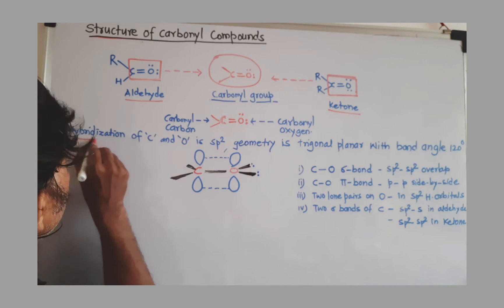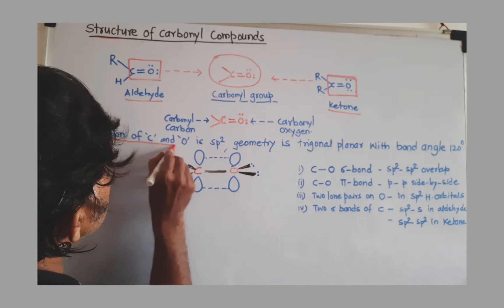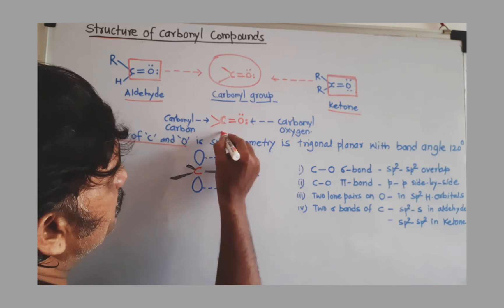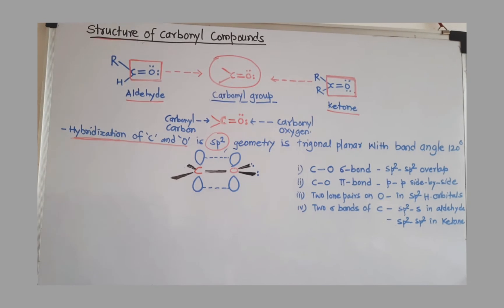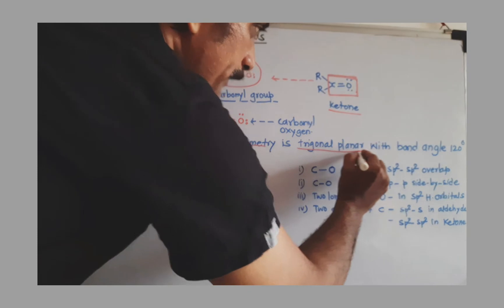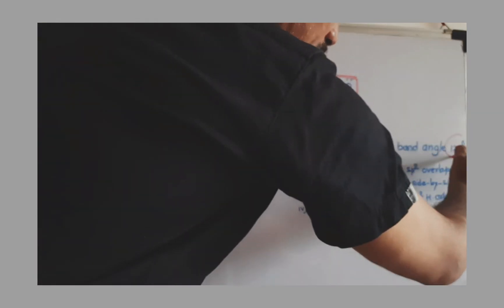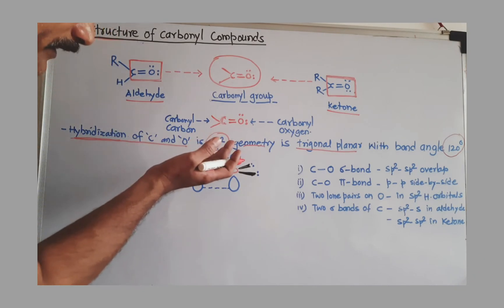When we start our discussion of the structure of carbonyl compounds, first we have to find the hybridization of both carbonyl carbon and oxygen. This hybridization is sp2. The geometry is trigonal planar with a bond angle of 120 degrees.